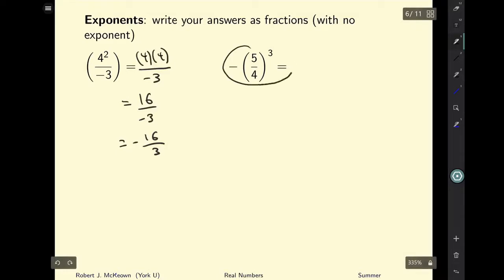Now let's take a look at our right hand side question. So what does the exponent mean here? Well a couple things. Notice that the negative sign is outside the exponent. So this is like writing negative 1 multiplied by 5 over 4 to the power of 3.